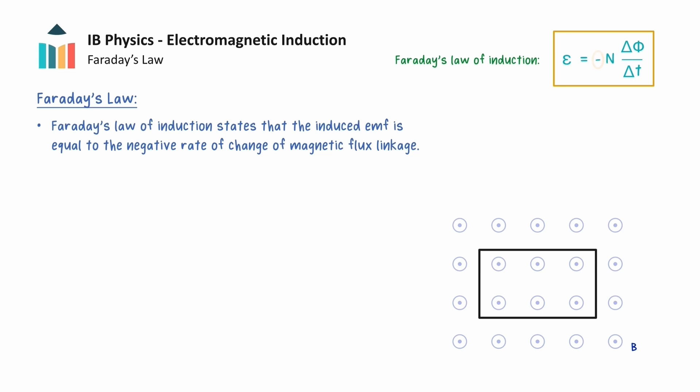But in this video, we will be primarily focused on the magnitude of the induced EMF. This expression shows that a change in magnetic flux with time will always create an induced EMF, but it is important to note that a changing flux does not necessarily induce a current. There will only be an induced current if there is a closed conducting loop or coil of wire.